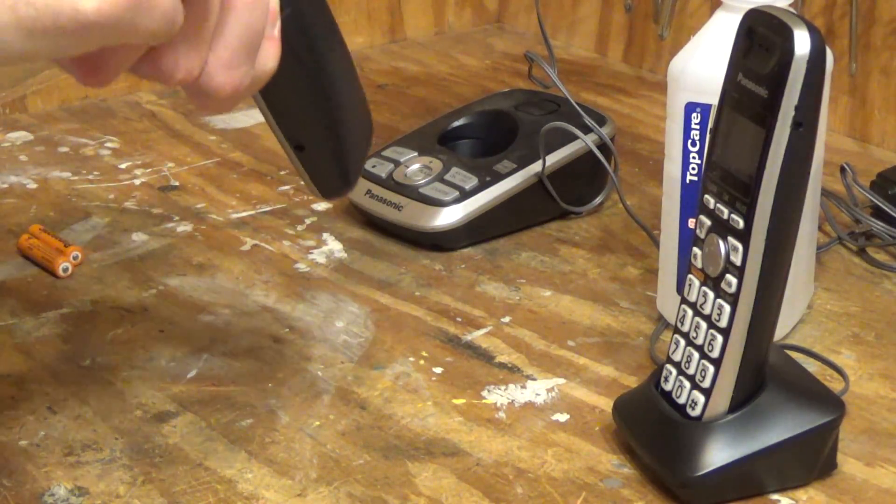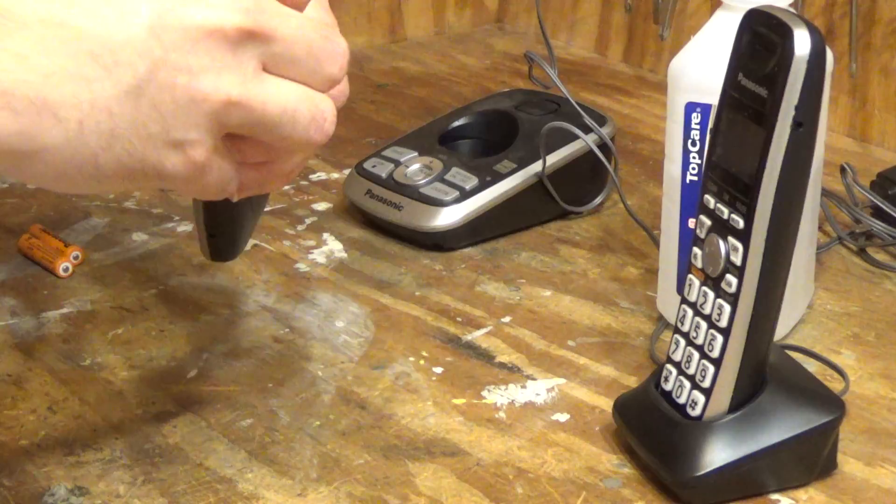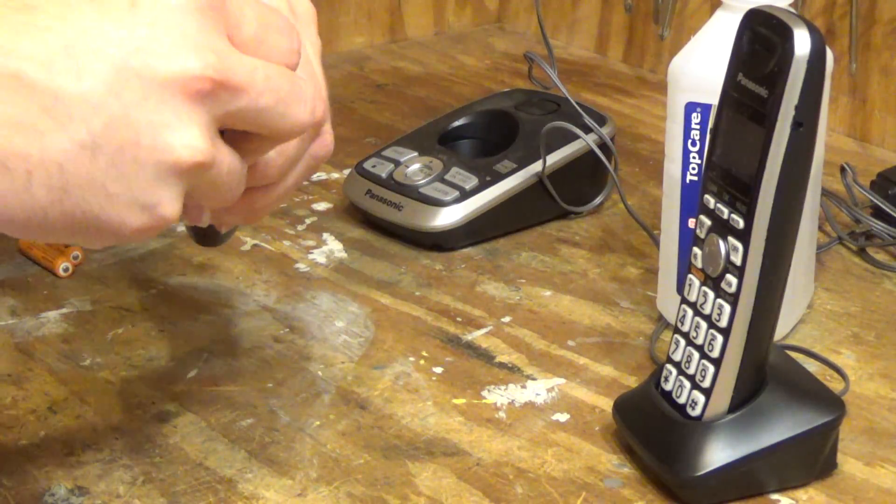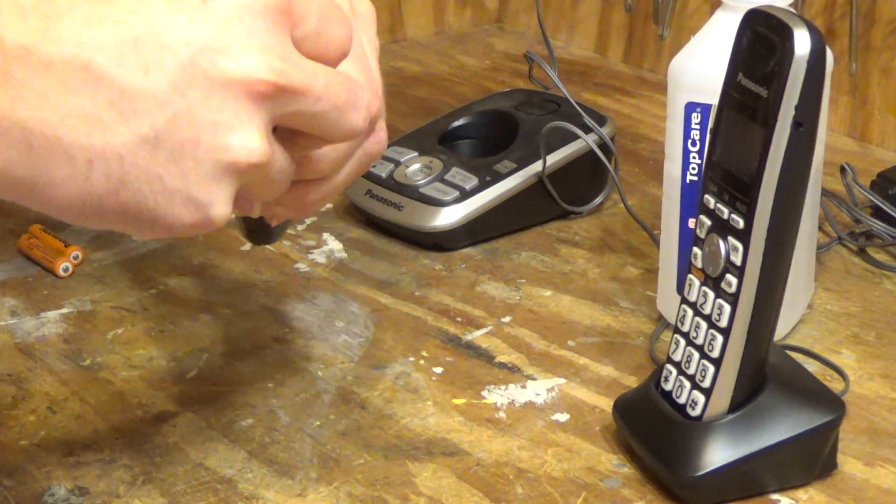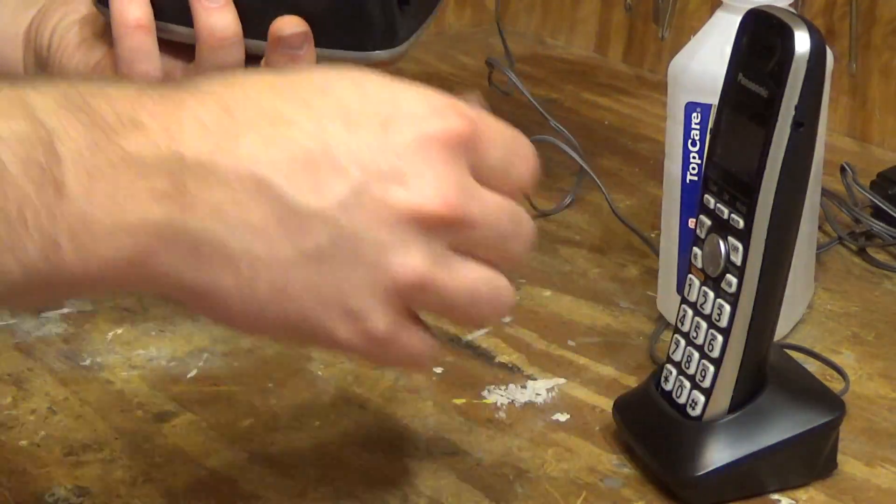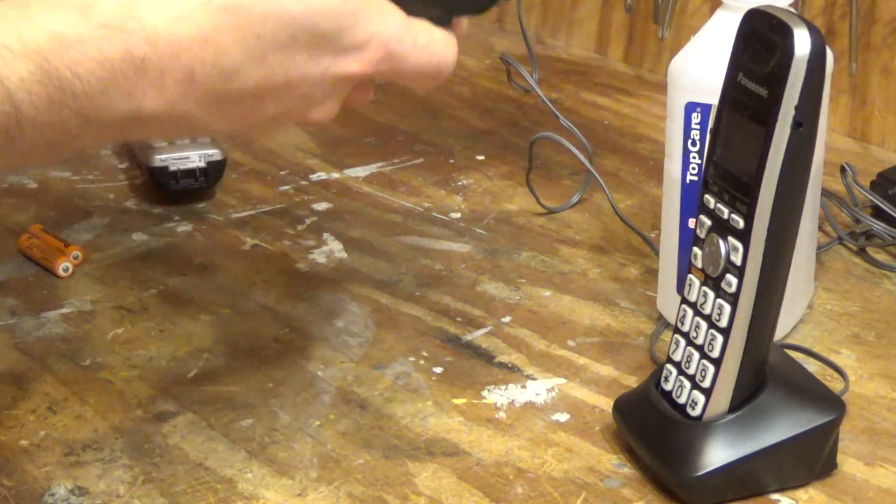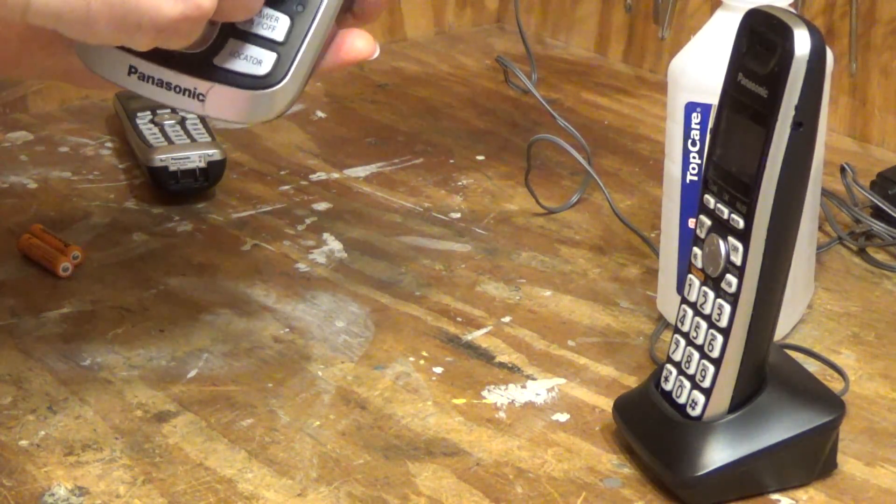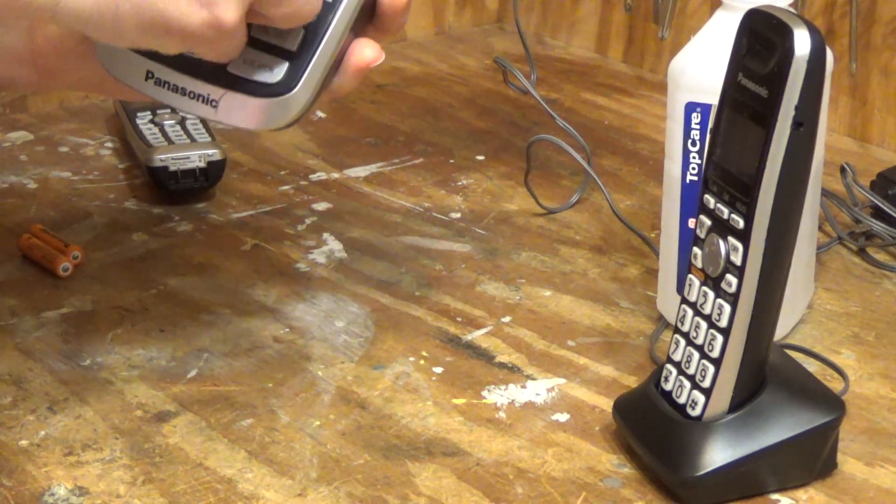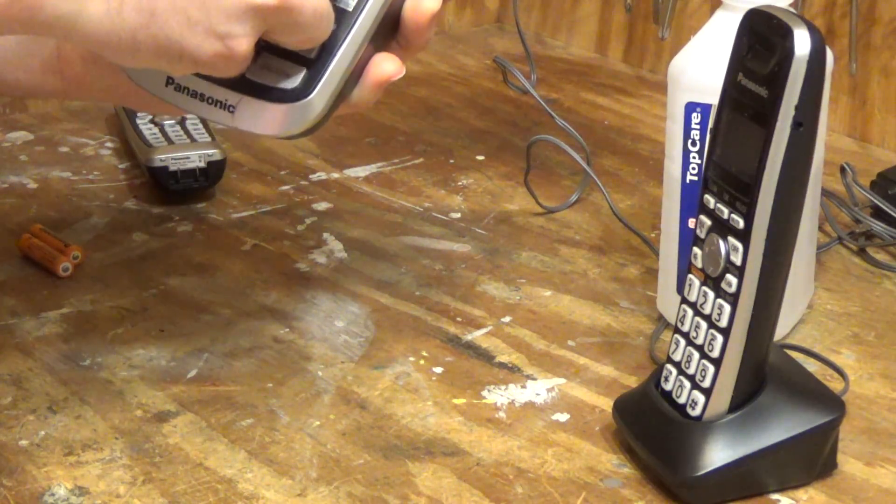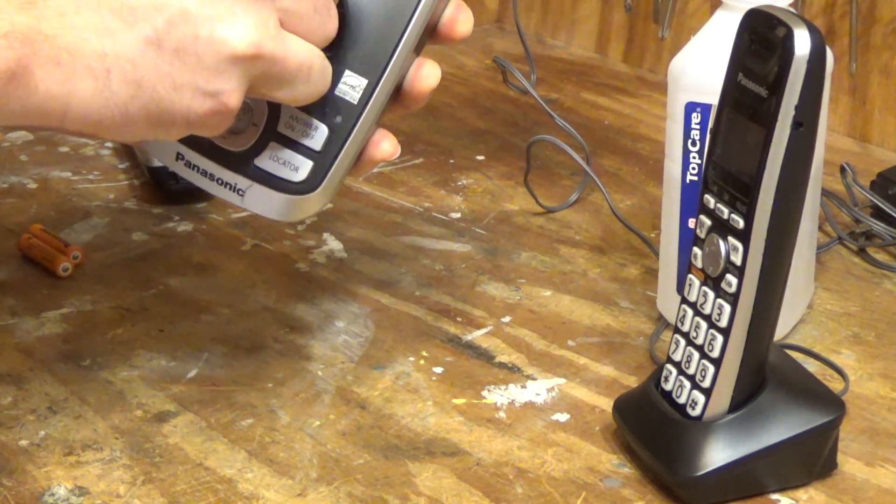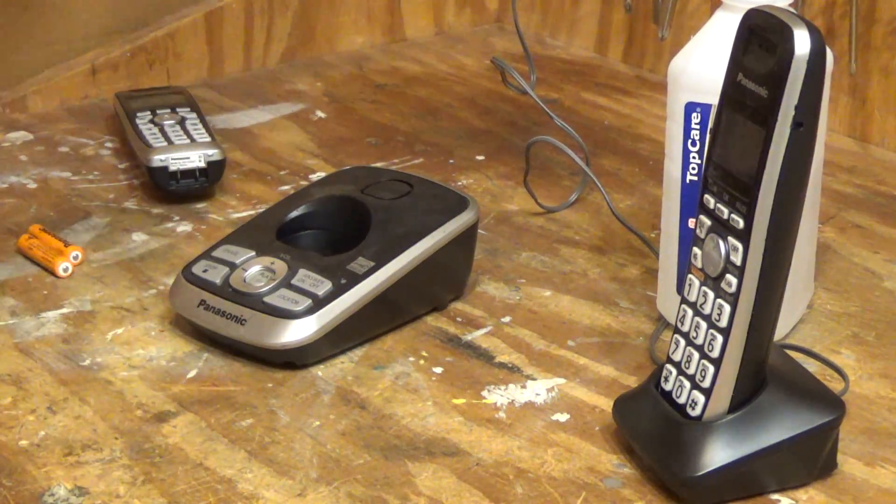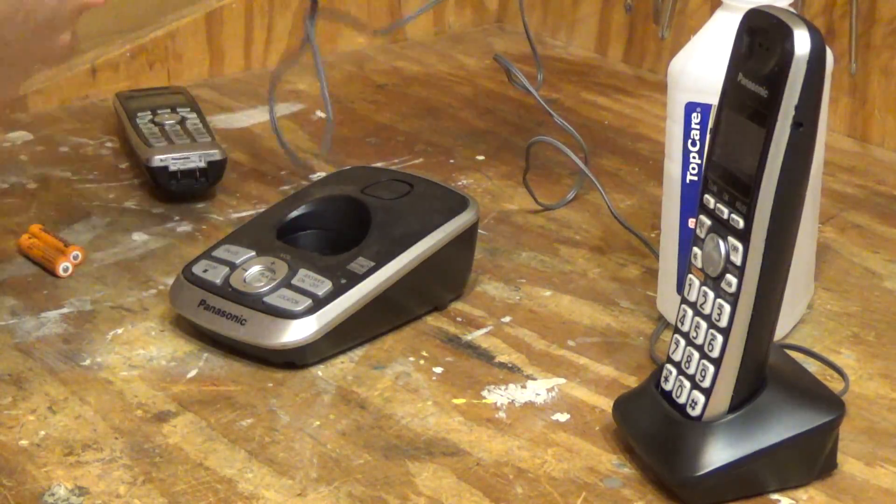So I'm going to go ahead and clean up the other contacts on the other handset, although this other handset didn't have any problems. Let's see here. These contacts don't look like they're dirty at all, so we'll just clean it from the outside and although that's not super effective, it should be sufficient in this case because there's really nothing to be cleaned off anyways. I'm going to power up this base and I'll check and make sure this other one is charging correctly as well.